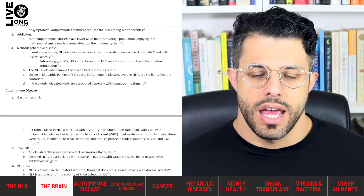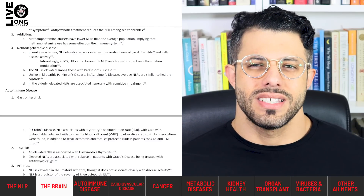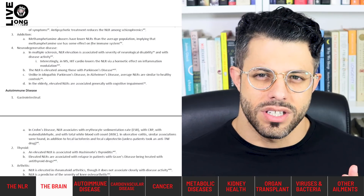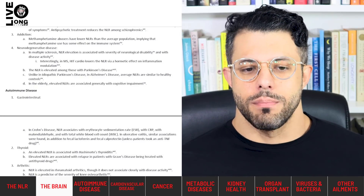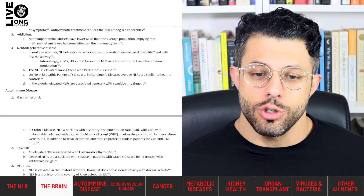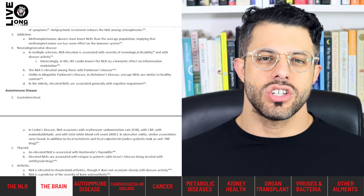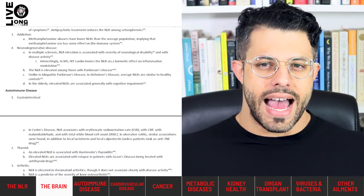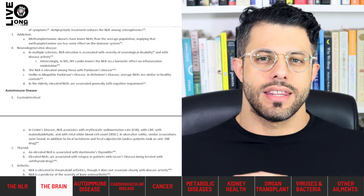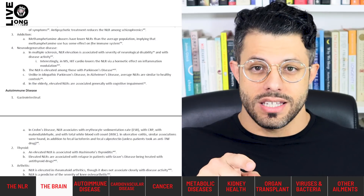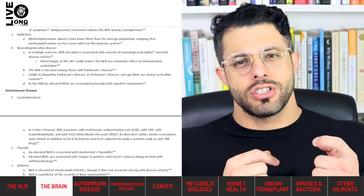In multiple sclerosis, NLR elevation is associated with the level of neurological disability and disease activity — when the disease attacks, the NLR elevates. Also in MS, HIIT cardio lowers the NLR via a hormetic mechanism: when you do HIIT you cause short-term inflammation, your body becomes more efficient at dealing with inflammation, and then your chronic inflammation level actually drops.